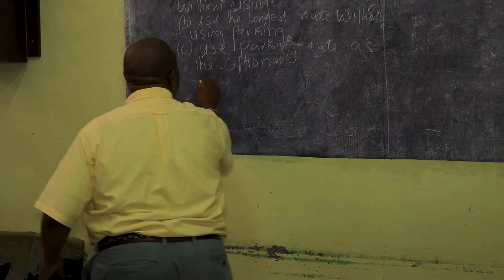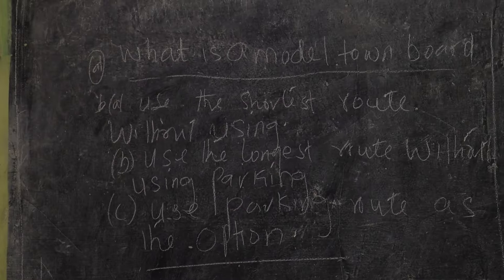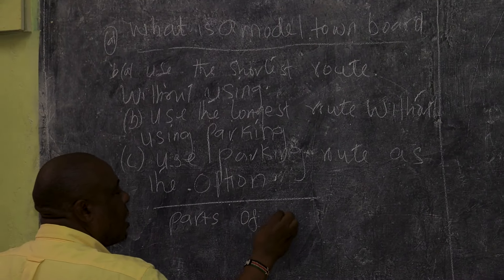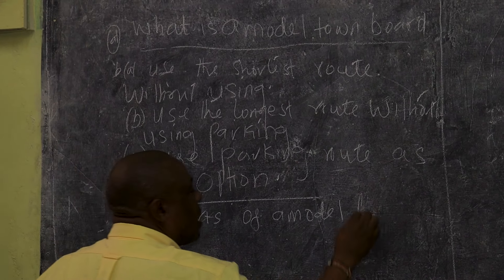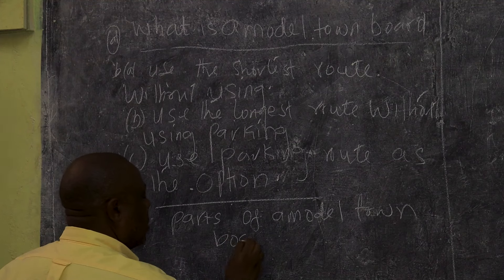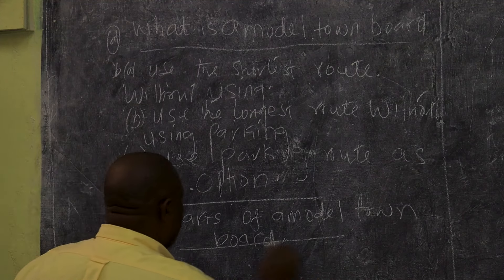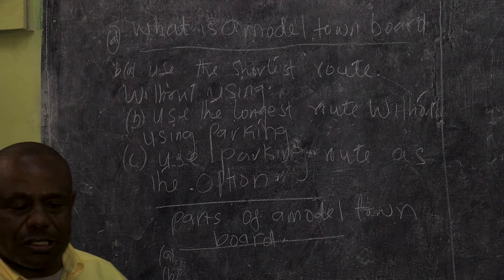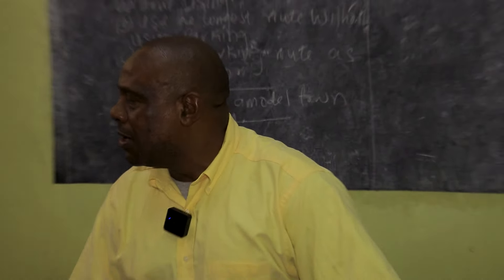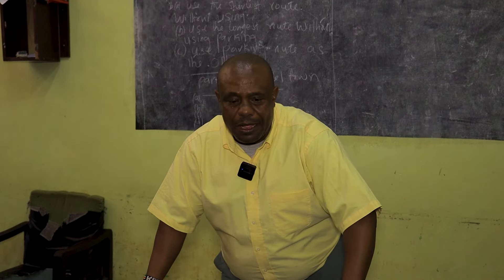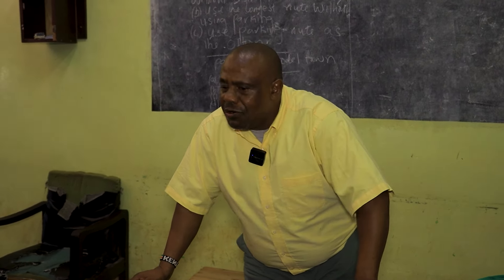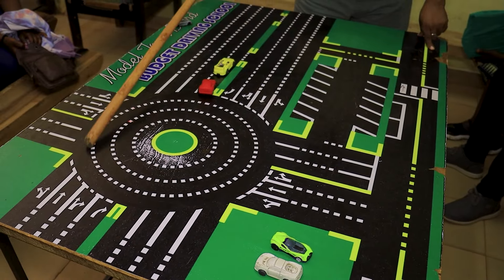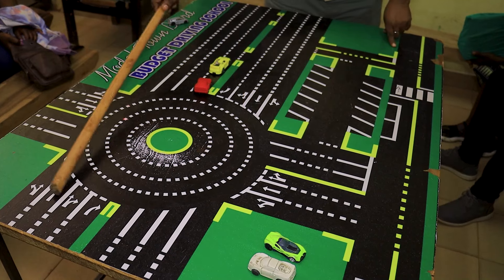After this, let me talk about the paths of a model town board. When we talk about paths of a model town board, there are quite a number of things and points to consider. Number one: what is found on a model town board?